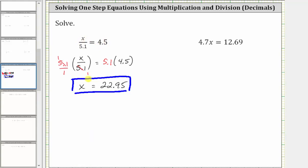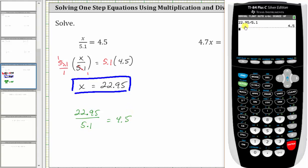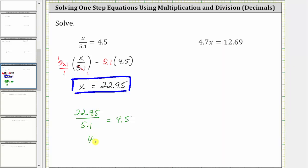And let's go ahead and check this. Substituting 22.95 for x gives us 22.95 divided by 5.1 equals 4.5. And now let's check the quotient. Notice 22.95 divided by 5.1 is 4.5. So the left side of the equation is equal to the right side of the equation, which verifies our solution is correct.